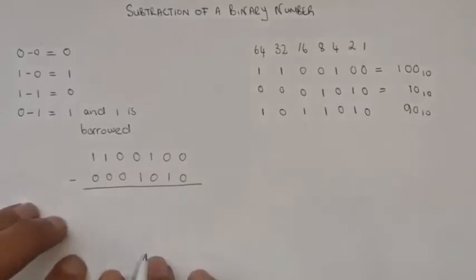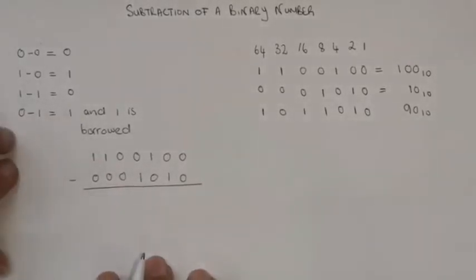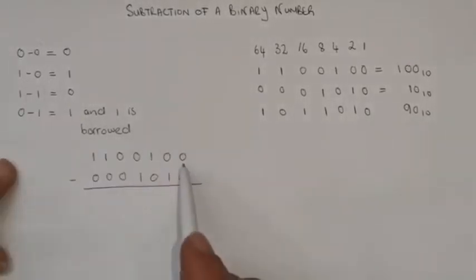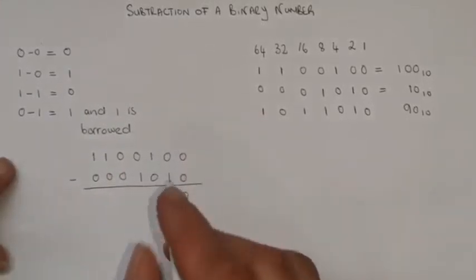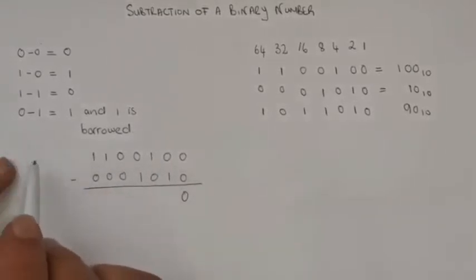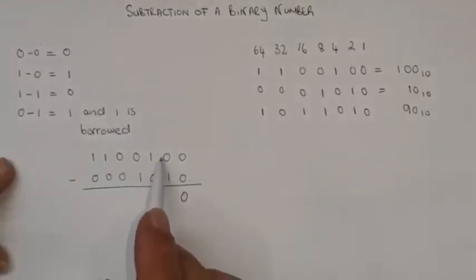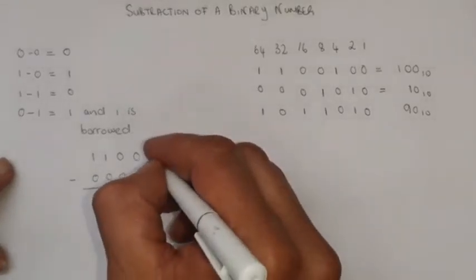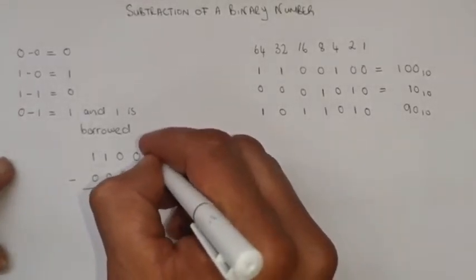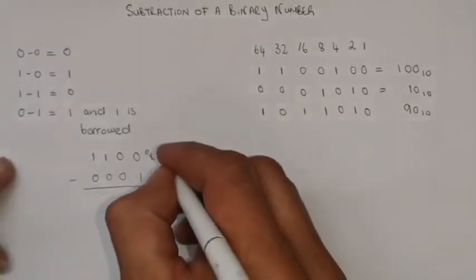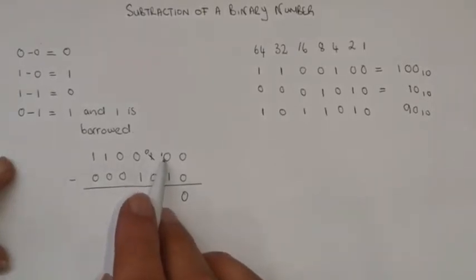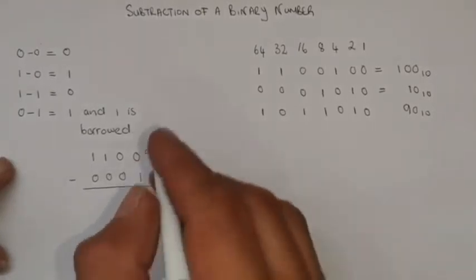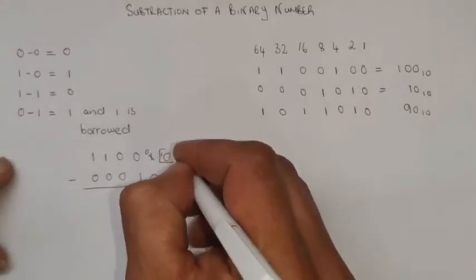Using the rules: 0 minus 0 is 0. The next column is 0 minus 1 — I can't subtract 1 from 0, so I need to borrow. I borrow a 1 from the next position, leaving a 0 there, and combine those two digits: that 1 and 0 combine to give me 2 in decimal.